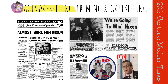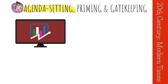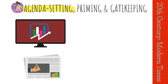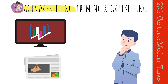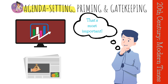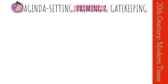For example, if the media are constantly talking about the economy, then people will start to believe that the economy is the most important issue facing the country. Even if people don't have a lot of knowledge about the economy, they will still be influenced by the media's coverage.